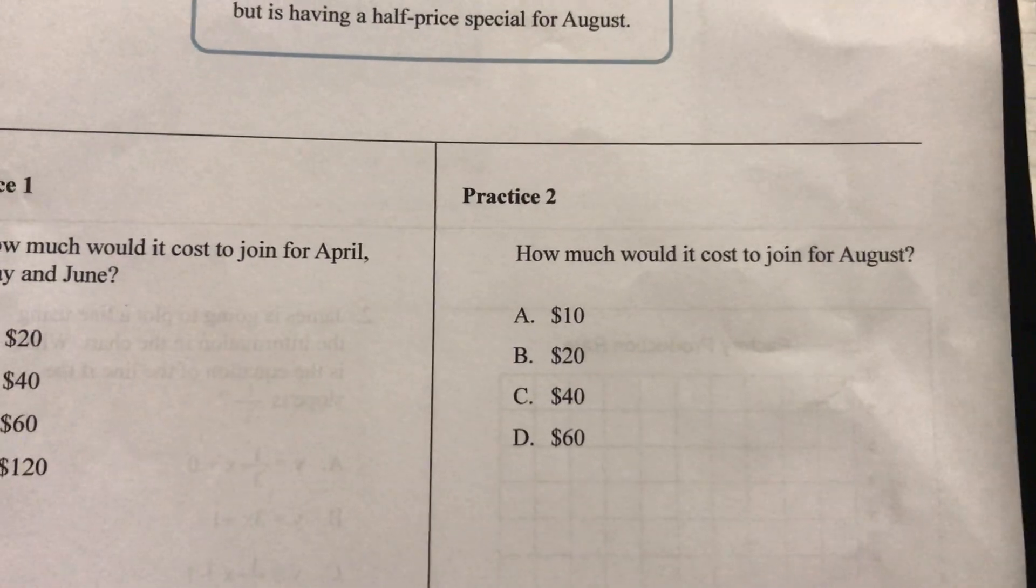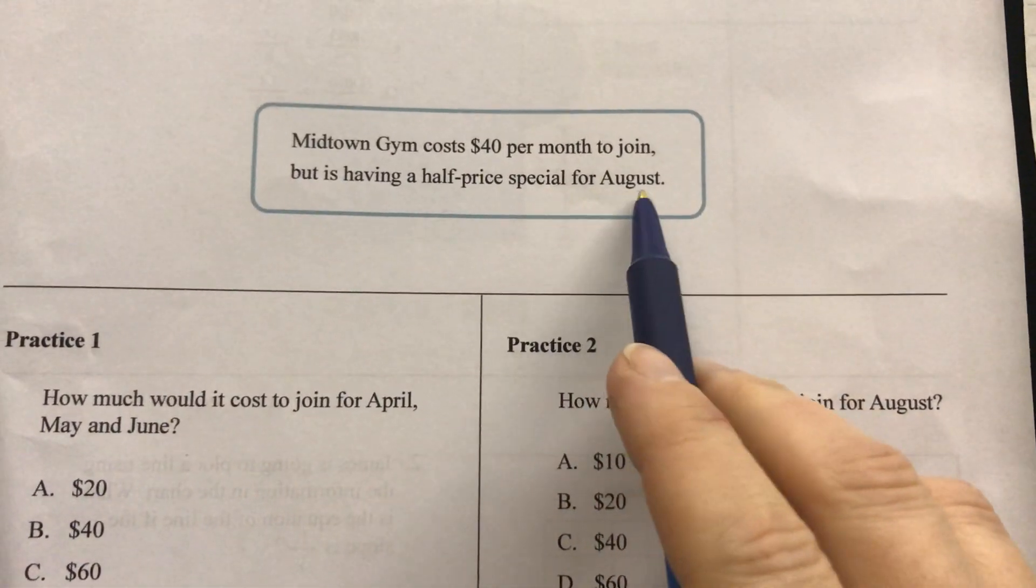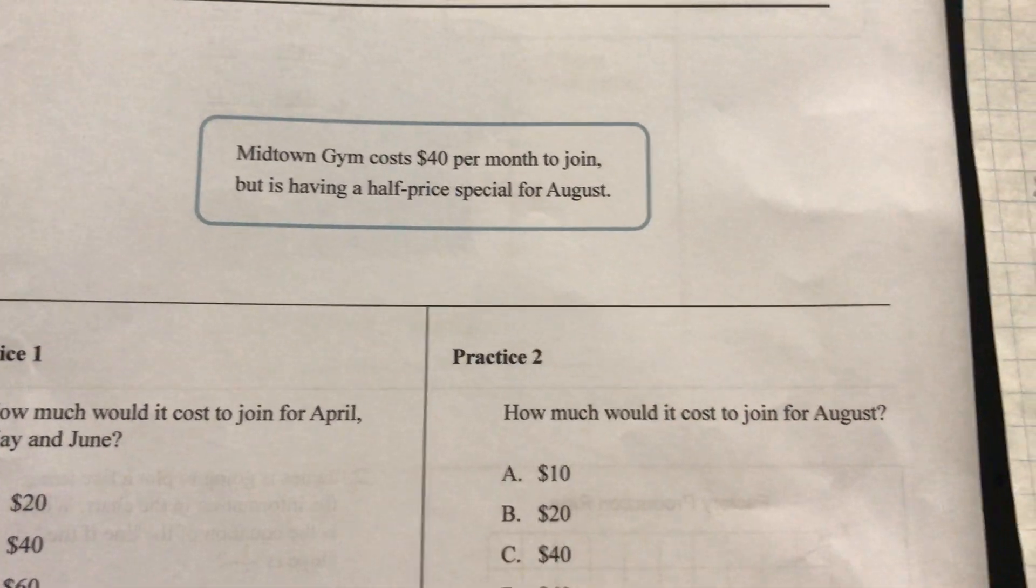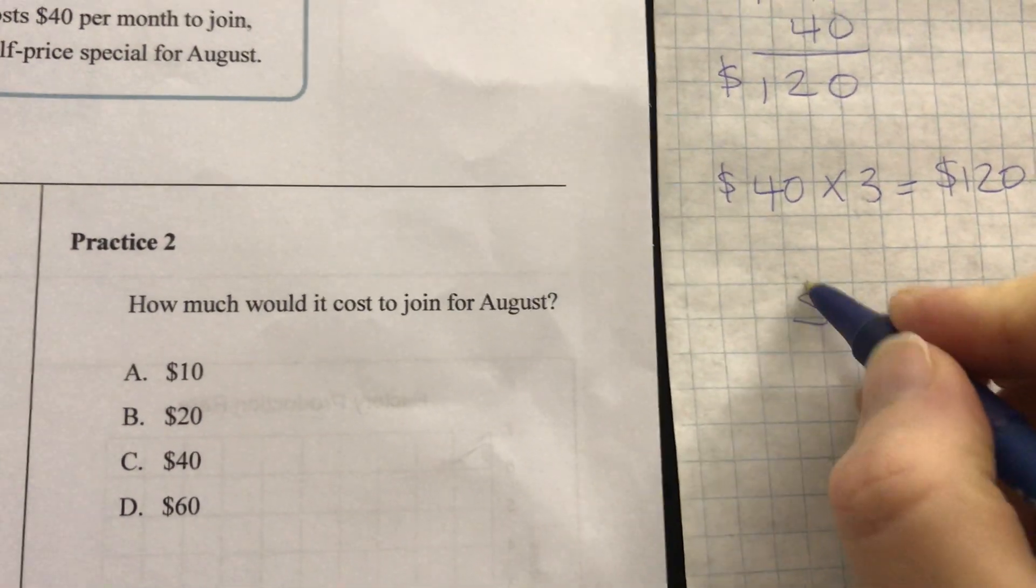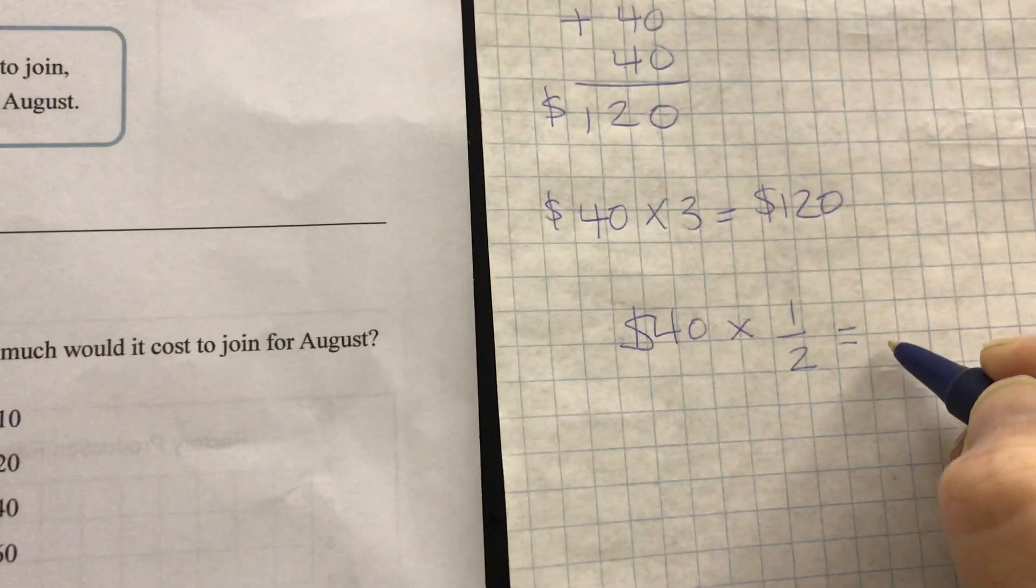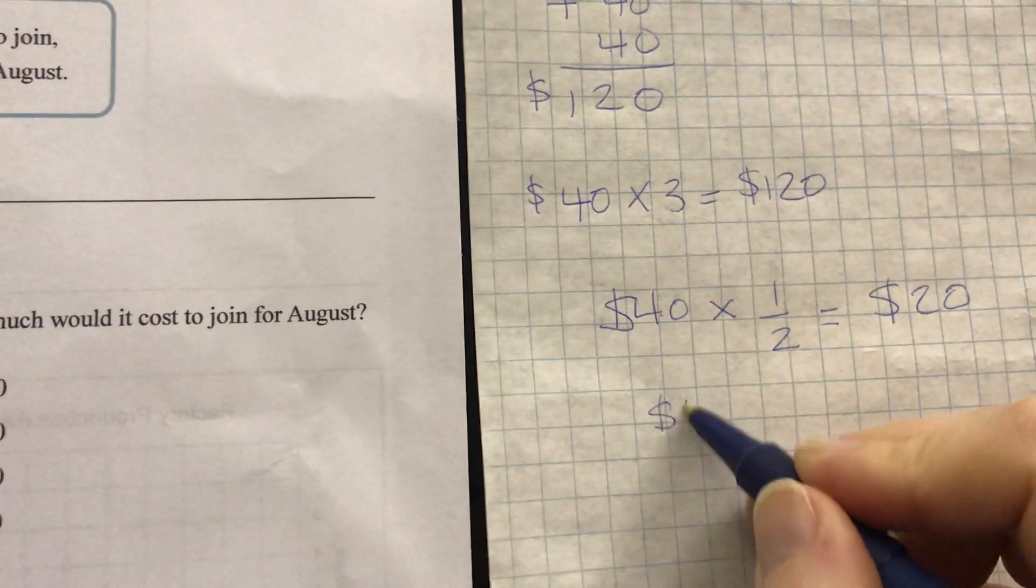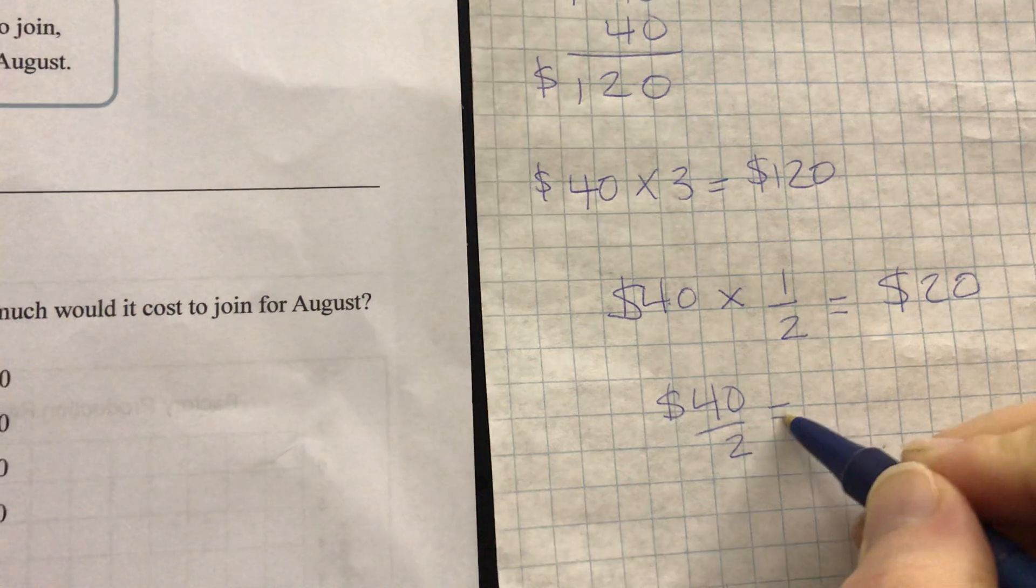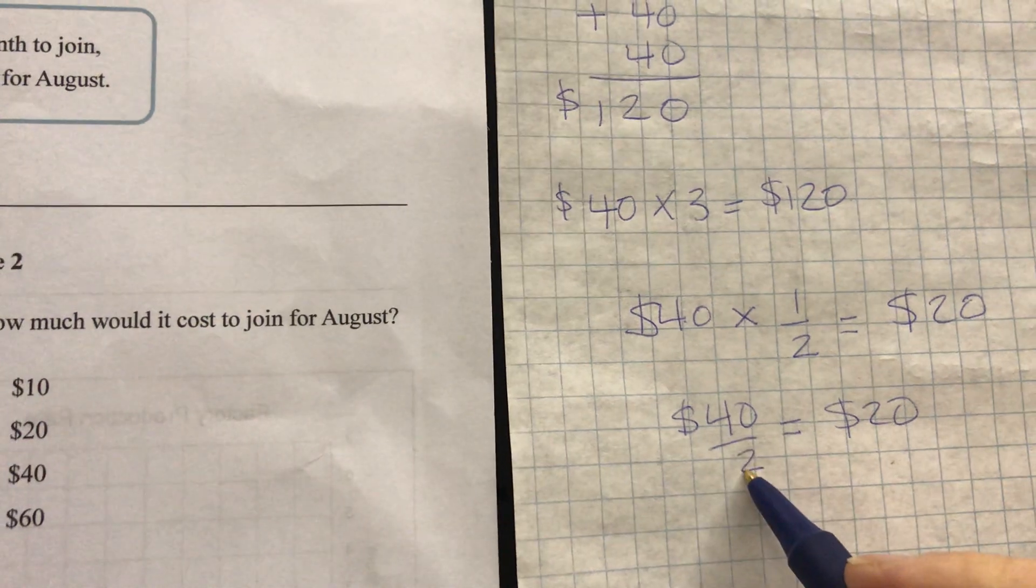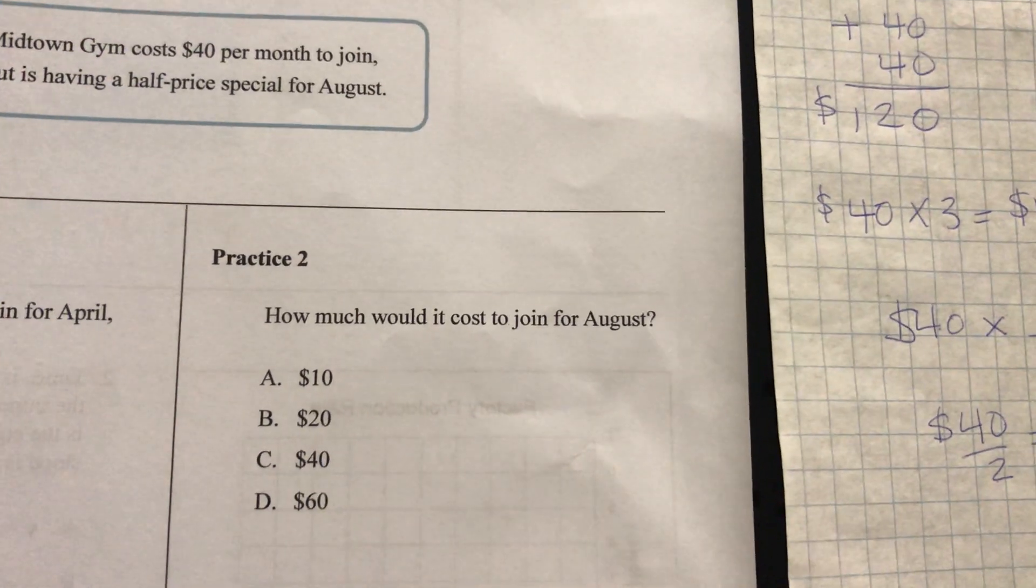Okay practice two, how much would it cost to join for August? Well I have to go back and read the problem really carefully. I see August here, having a half price special for August. So if its regular price is $40 and I need to know half of that, so half of 40 is 20. 40 divided by 2, shared into two equal groups, cut in half is going to be 20. And again if I didn't know that I could put in 40 divided by 2, use the division button on the calculator to get 20. So my answer is going to be B, 20.